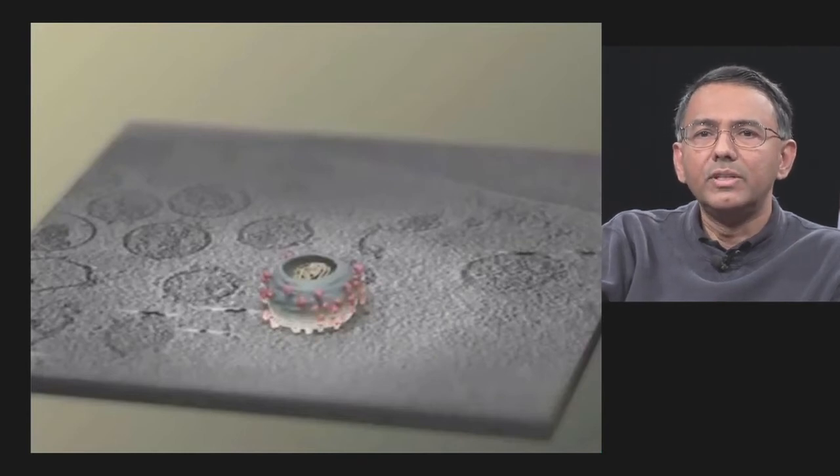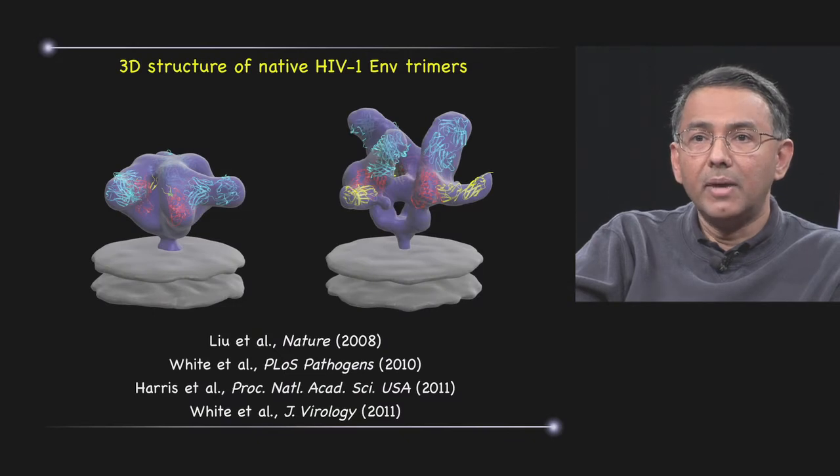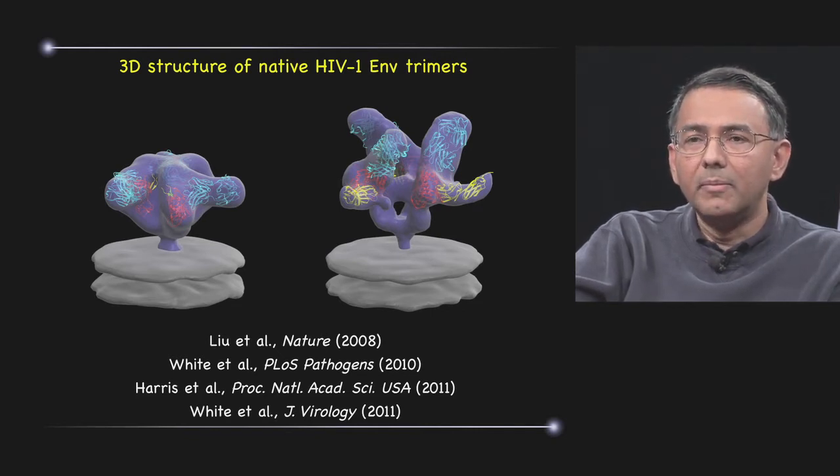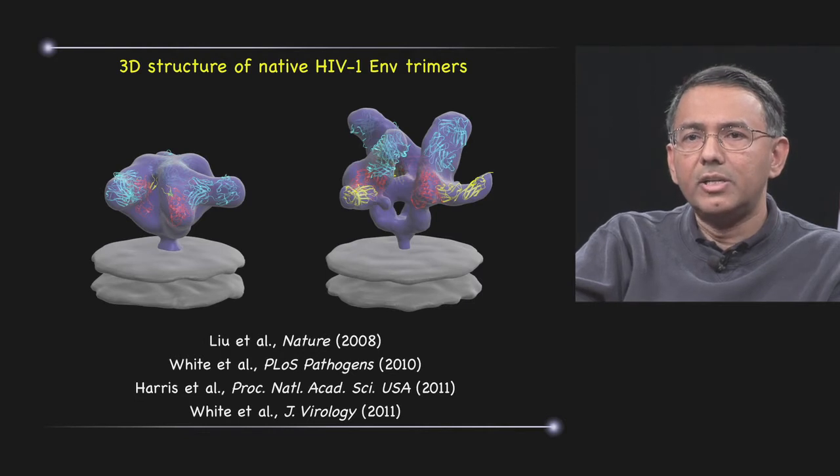And by averaging thousands of these images, we can then obtain density maps which are at resolutions in the 2 to 3 nanometer range. In this case, it's about 2 nanometers. And these contain a lot of information when you combine them with the X-ray crystallographically determined structures of pieces of the protein. Here,